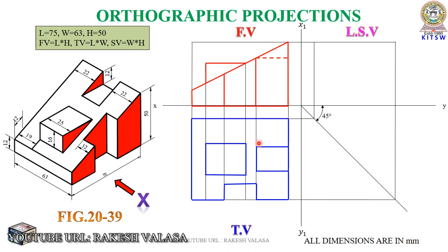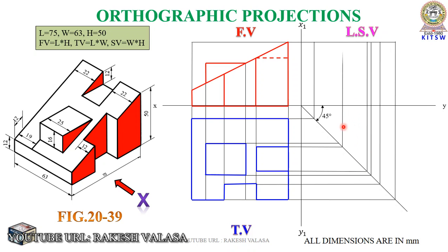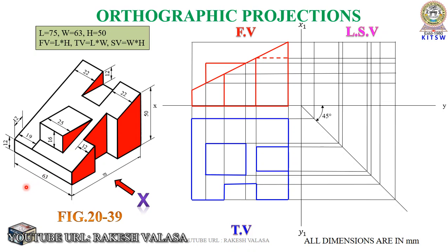For the side view, from each and every edge point or corner point, draw projectors to the left side view. Draw horizontal lines from each edge of the top view up to the 45-degree line, then draw vertical projectors down. Similarly draw horizontal projectors from the front view — from each corner point. When the observer sees from this side, the bottom surface is visible, the rectangle surface is visible, the slant edge is visible, and the slant surface is also visible in the side view. However, the surface area is reduced. The maximum height is 50 mm.